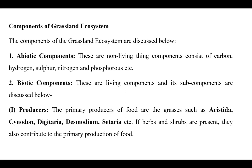The biotic components include all living organisms, whether in the form of producers — small non-woody plants or grasses, especially Aristida. If herbs and shrubs are present, they also contribute to the primary production. All these small grasses act as primary producers, producing food for other animals in the grassland ecosystem.